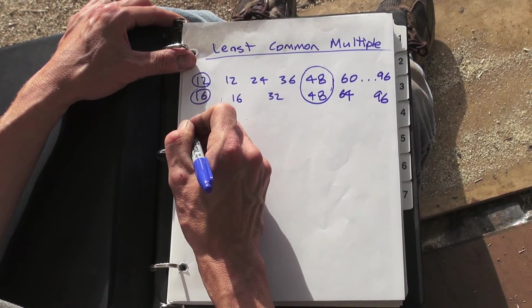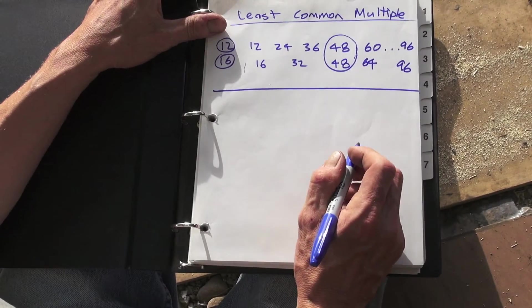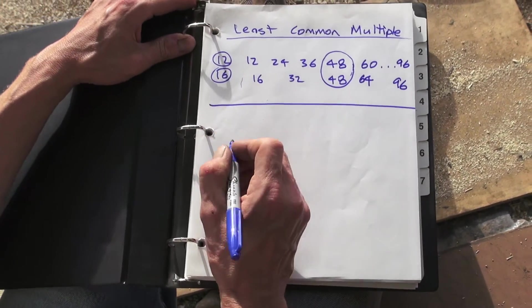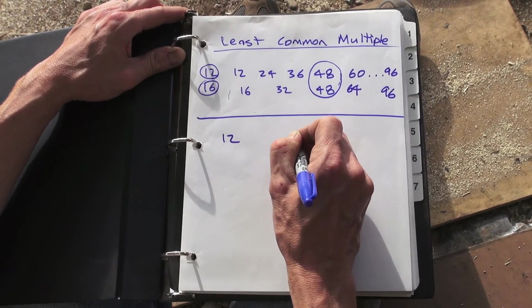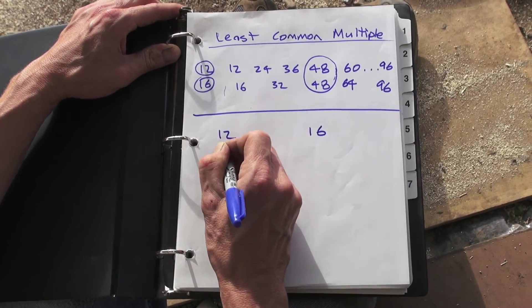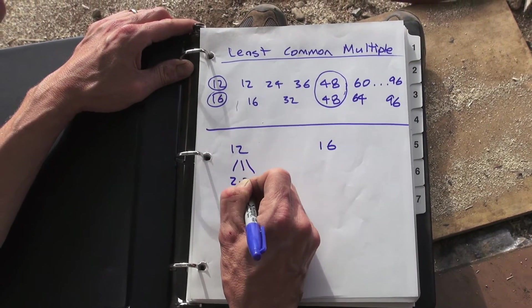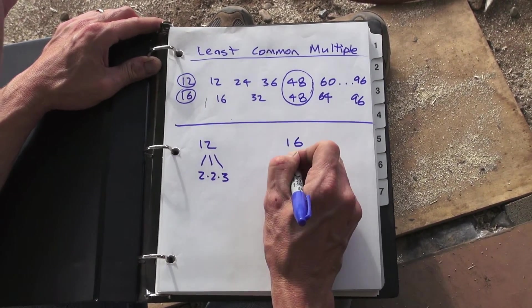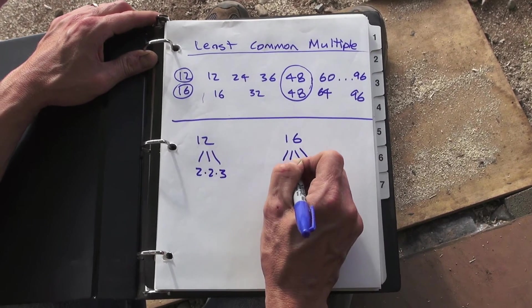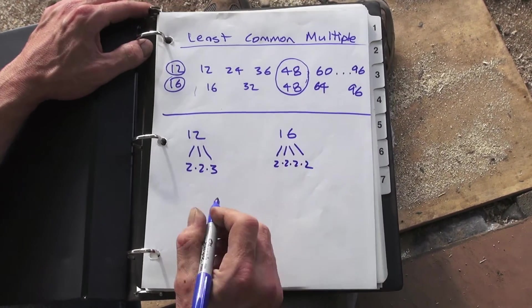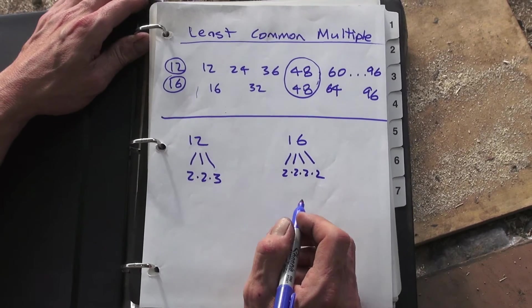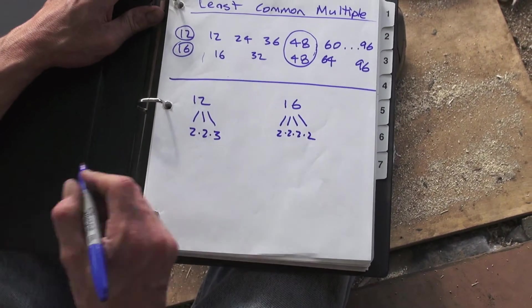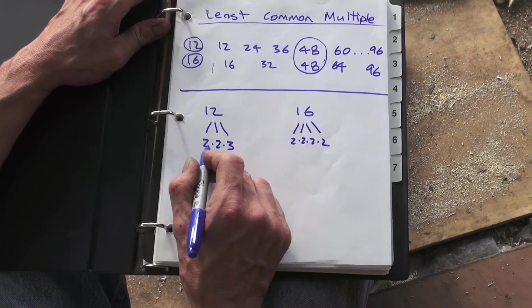The other way you can do it is by breaking down each number into prime factors. So if you know how to do that for each of these, which I'm going to assume you do, if you broke this down you'd get 2 × 2 × 3, and for this one you'd end up, if you broke it down all the way, you get 2 × 2 × 2 × 2.